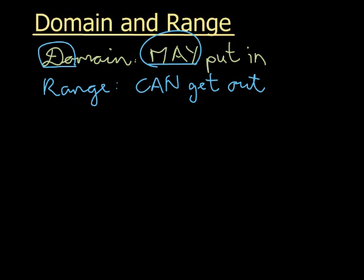Welcome to the next topic. We're looking now at range. We've already looked at what the domain is — the domain is what we may put in. We saw that we're not always allowed to have any input: in a fraction, the denominator may not be zero; in a radical, the input of an even radical may not be less than zero; and in a logarithm, the input may not be zero or negative. When it comes to range, range is what I can get out. Obviously, I can't get out every possible number with certain functions, which means the range is also restricted.